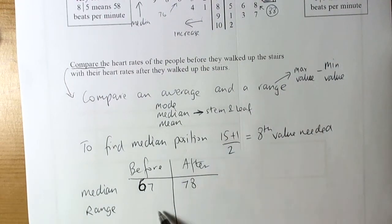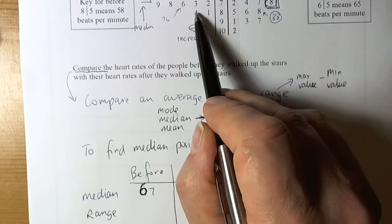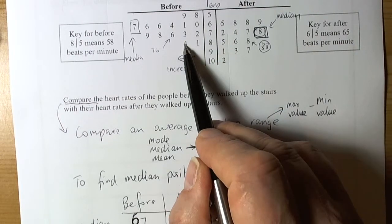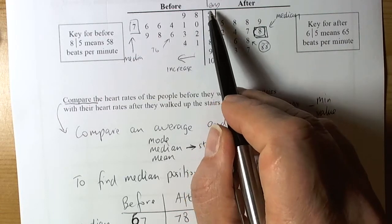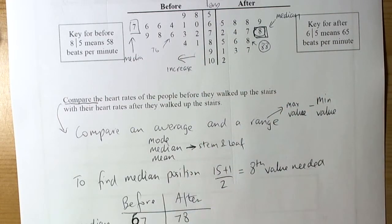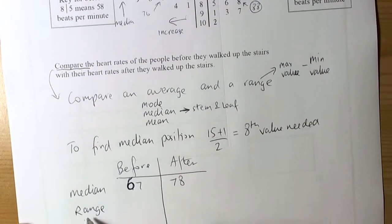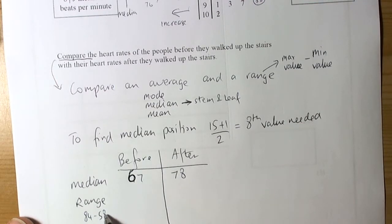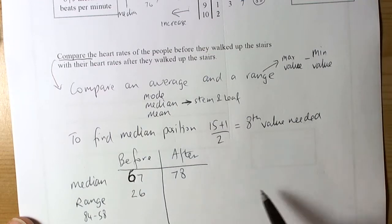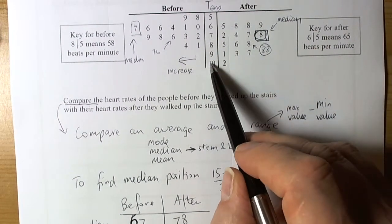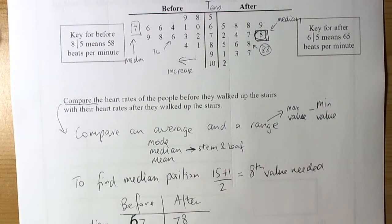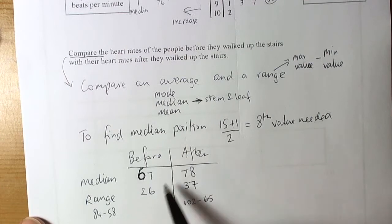Then we go through the process of finding the range. So we need the maximum value. So the maximum value in this one was 84. Remember to read this carefully. Go to the left this side. So the maximum value was 84. And the minimum value was 58. So 58 and 84. So for the range here we're going to do 84 take away 58. And 84 take away 58 is 26. So the range is going to be 26. And the range for this one, the maximum value is 102 and the minimum value is 65. So for this side we're going to be doing 102 take away 65. So 37.